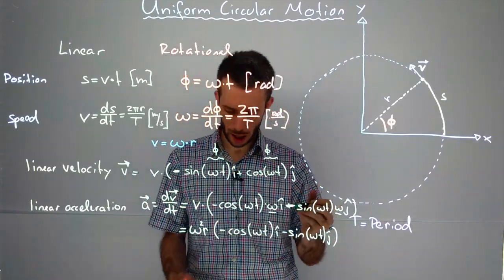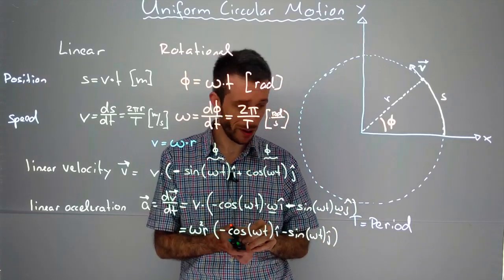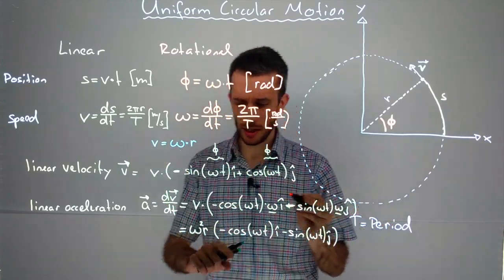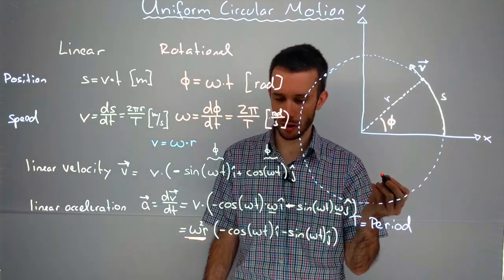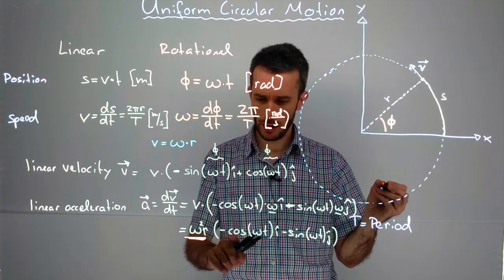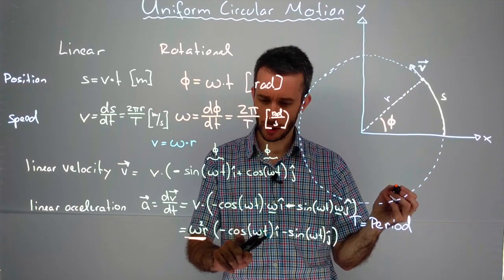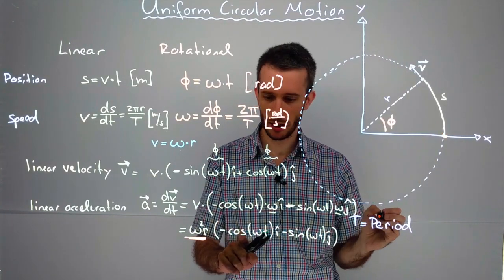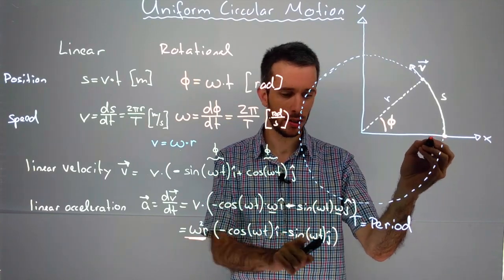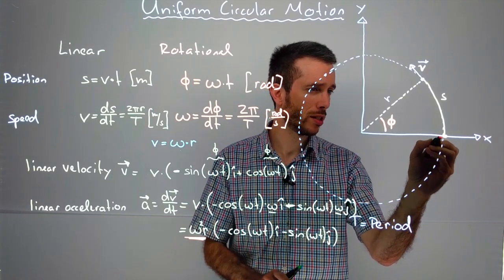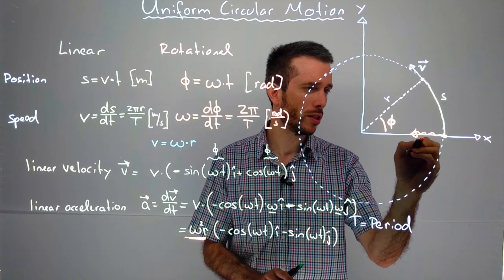Let's have a look what that actually would mean. My acceleration has a maximum amplitude of ω² times r. And which way is it oriented? If I look here at my position here, I would have cosine(ωt), so minus 1 in x, and sine of 0. So here my acceleration would be going this way.